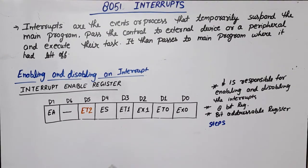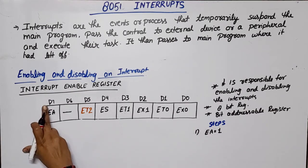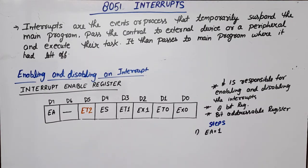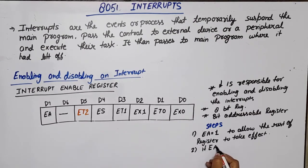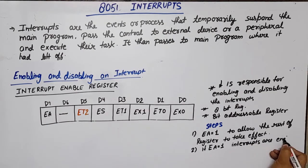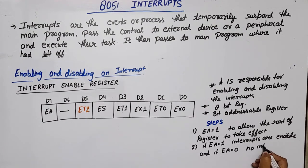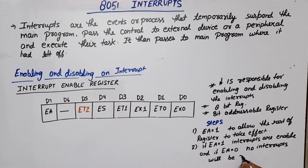Step 1: EA should be equal to 1 — meaning bit number D7 of the IE register should be 1. This is required for the register to work effectively. Any particular bit will work effectively only when EA equals 1. Step 2: if EA is equal to 1, interrupts will be responded to.